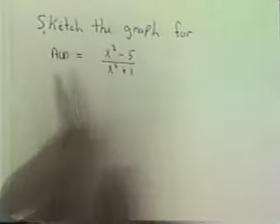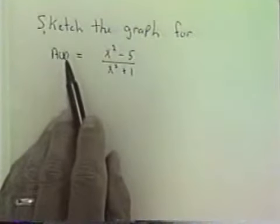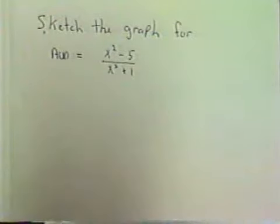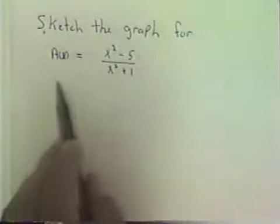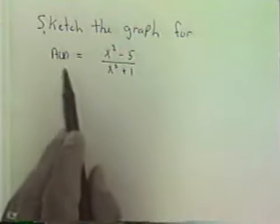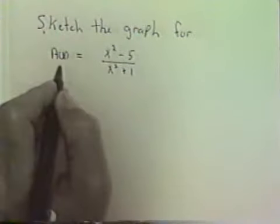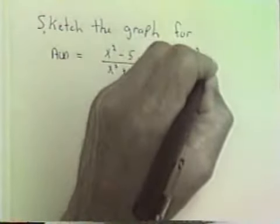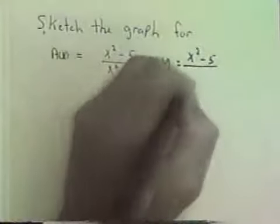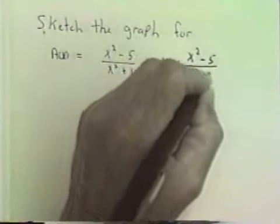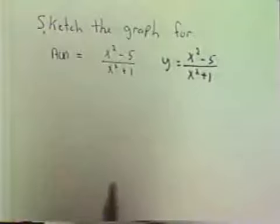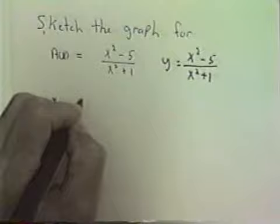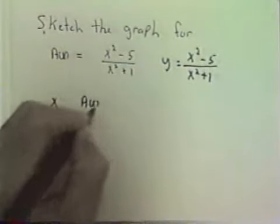Now let's sketch the graph for a as a function of x is equal to x squared minus 5 over x squared plus 1. Well to graph a function, the first thing you want to do is solve for y. Remember this is just another way of writing y is equal to x squared minus 5 over x squared plus 1. So really we've already solved for y. Now I need to make a table of values. I need to do x and a as a function of x.